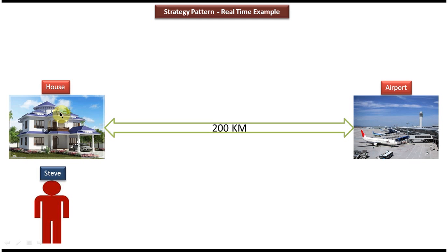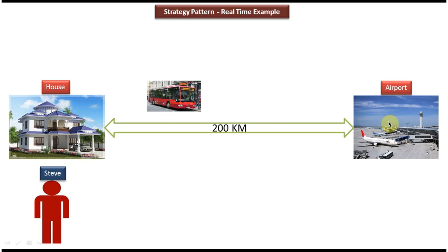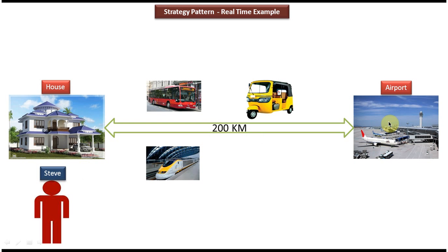On the left side you can see a house where Steve is staying, and on the right side you can see an airport. From Steve's house to the airport the distance is 200 kilometers. Suppose Steve wants to go to the airport. He has different transport modes he can use: he can use a bus, an auto, a train, or a taxi to go to the airport.